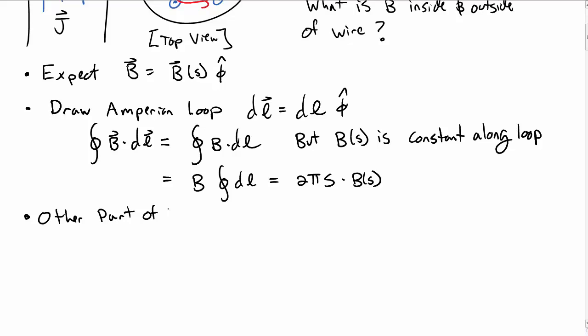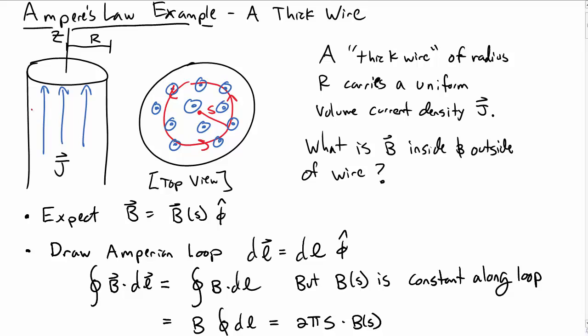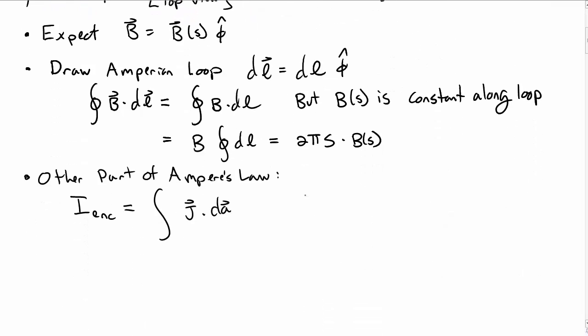The other part of Ampere's law involves the enclosed current. We need to compute i enclosed, which is the integral of j dot dA. Our Amperian loop is pointing in that direction, and dA is the unit vector pointing normal to the surface inside, pointing upwards by the right-hand rule.